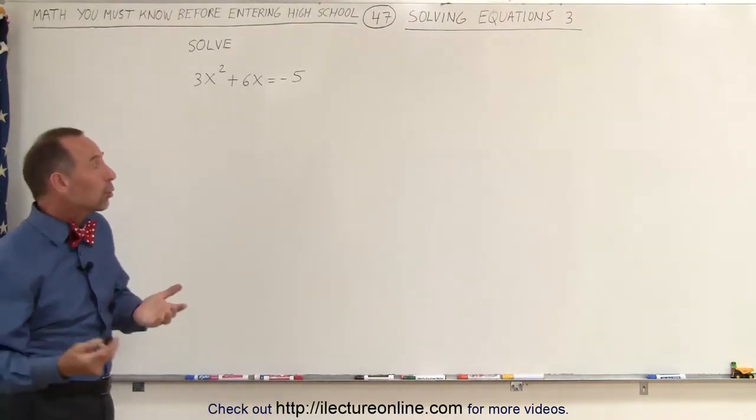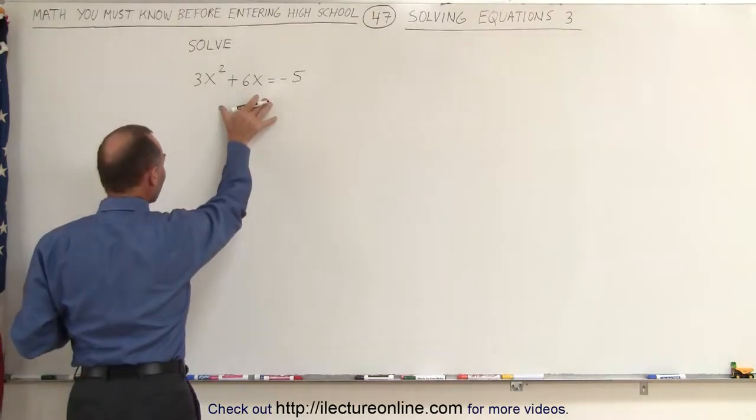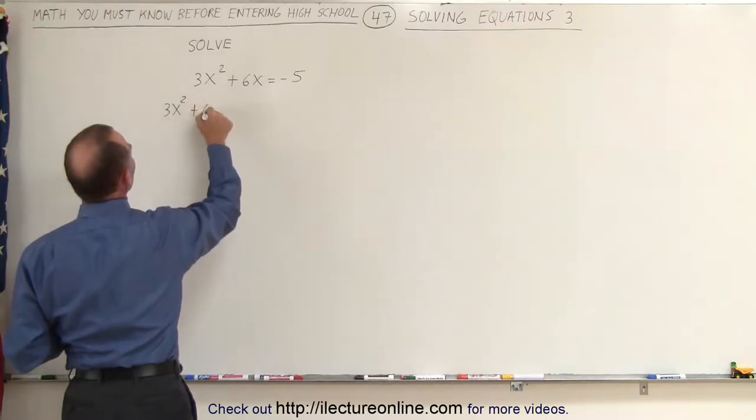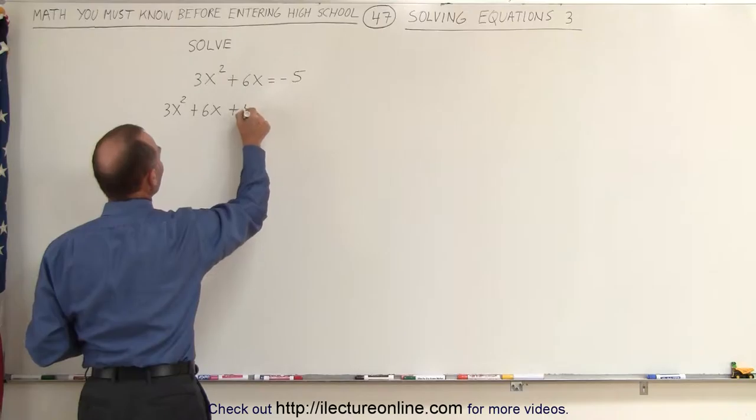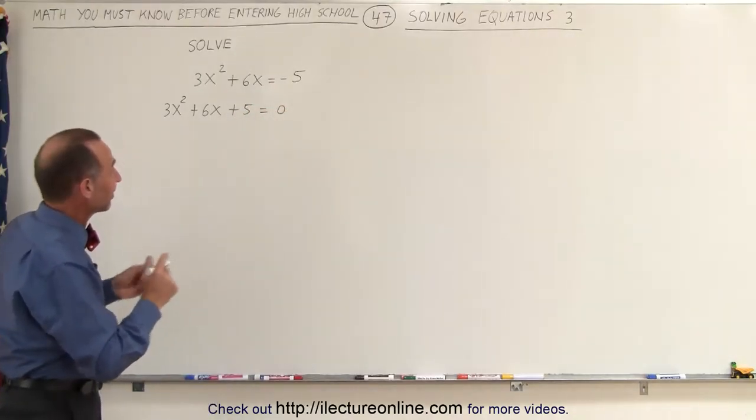Since it's a quadratic equation, we want to move all the terms over to one side and set it equal to 0. So the equation then will look as follows: 3x² + 6x. When we move the minus 5 over to the left side, it becomes a plus 5 equals 0. Remember, whenever we cross the equal sign, the sign changes.